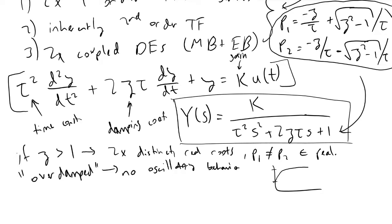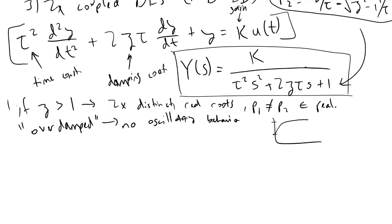This was case one. If we look at case two, if zeta equals one, we find that p1 equals p2 and our system is referred to as critically damped. In the case of critically damped systems, we again see behavior that resembles overdamped systems in which we do not see oscillations occurring.